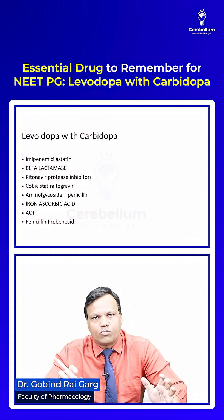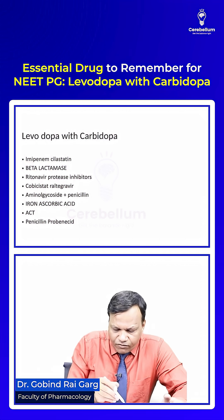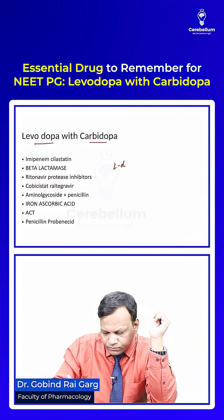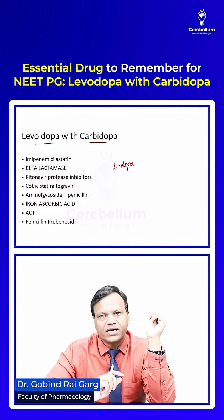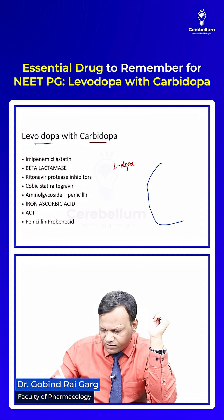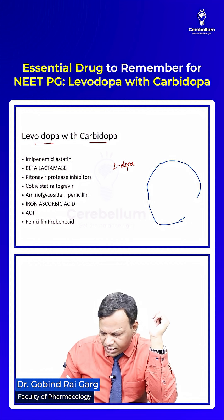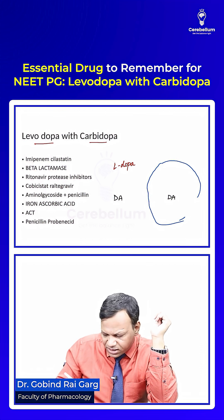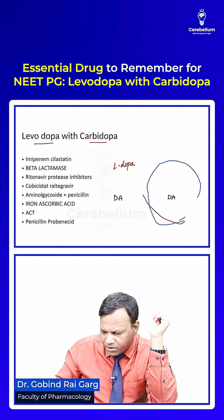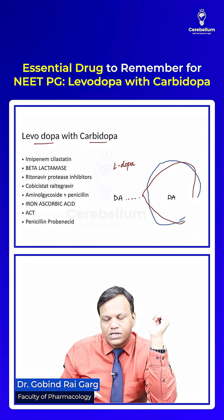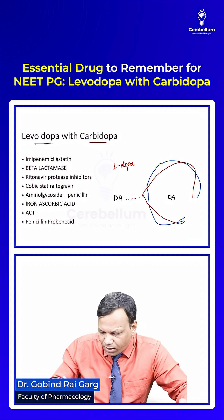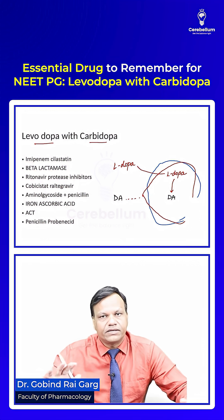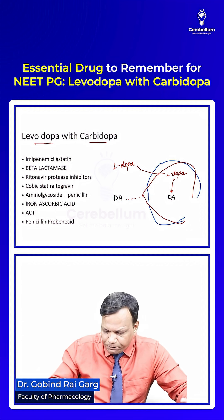Levodopa with carbidopa — levodopa is used in the treatment of Parkinsonism. In Parkinsonism, we want dopamine in the brain, but there is a deficiency of dopamine. We cannot give dopamine directly because dopamine does not cross the blood-brain barrier and cannot enter the brain. So instead, we give levodopa, because levodopa can cross the blood-brain barrier and form dopamine in the brain.